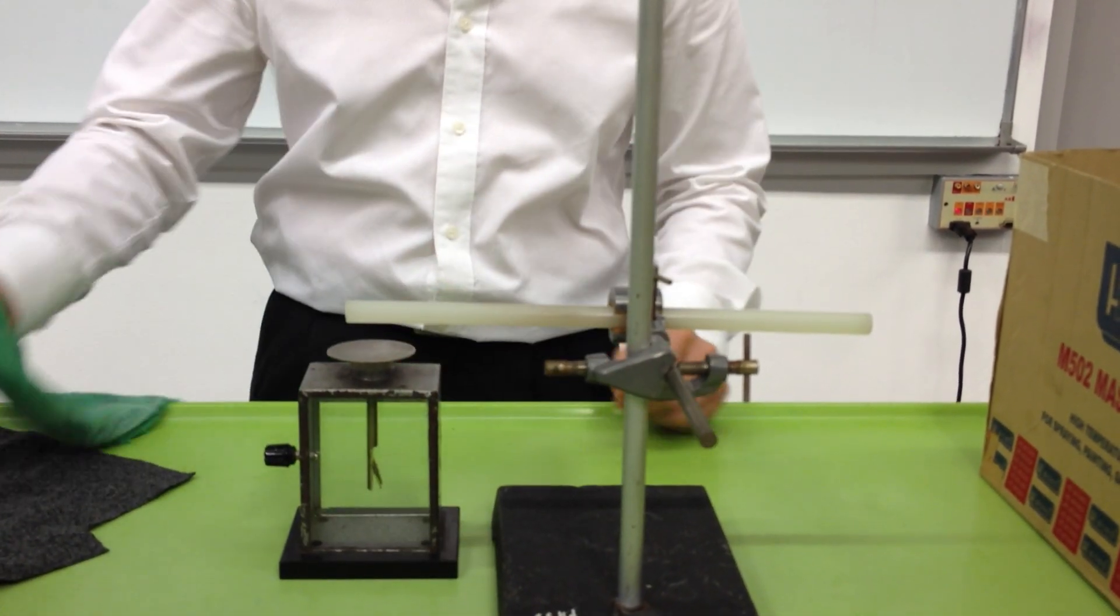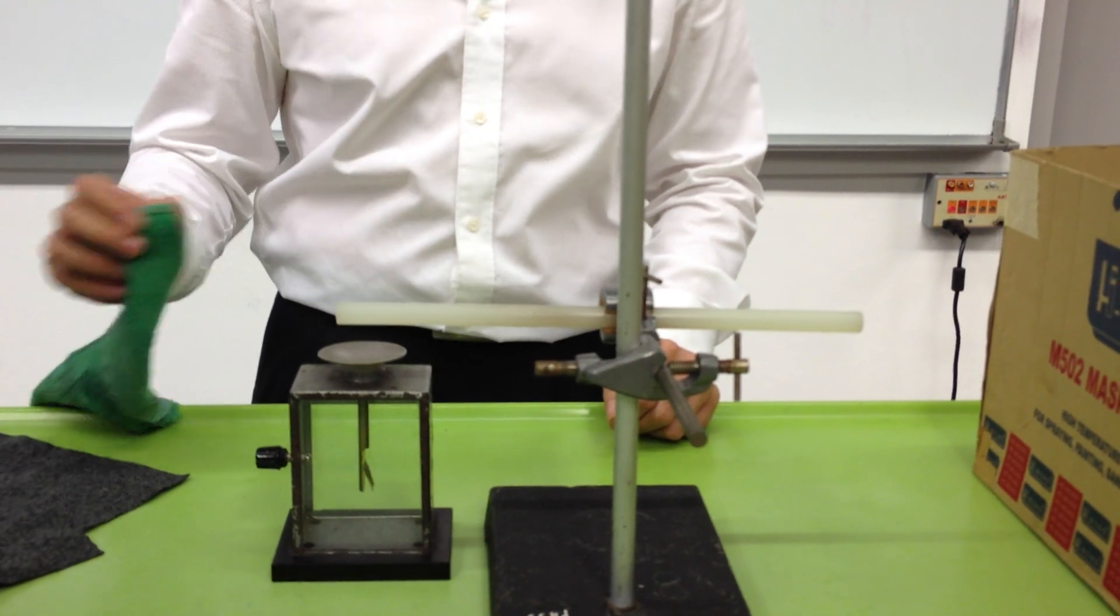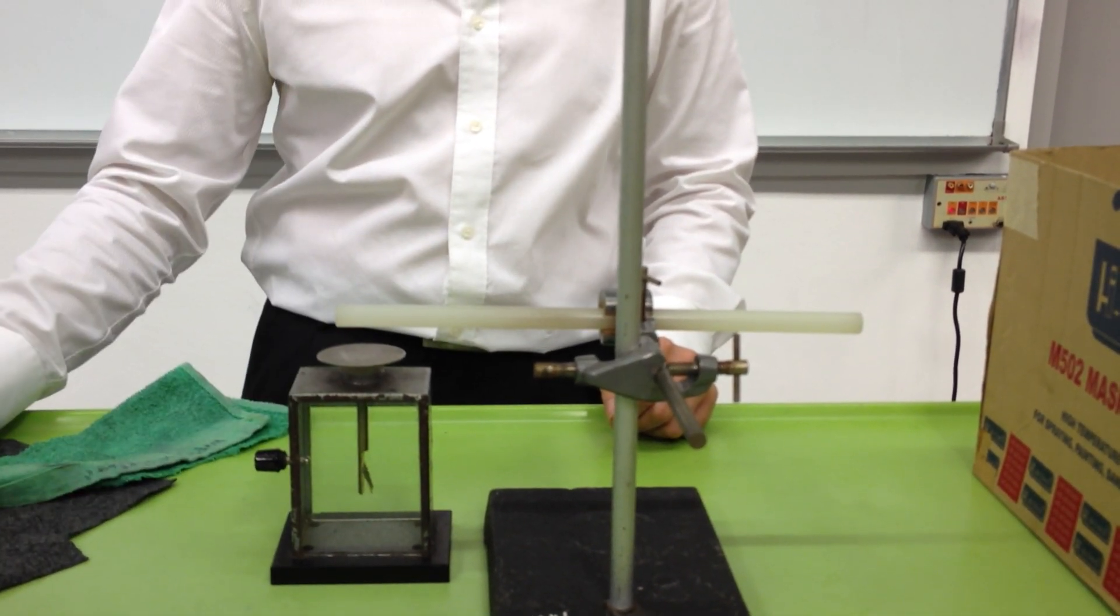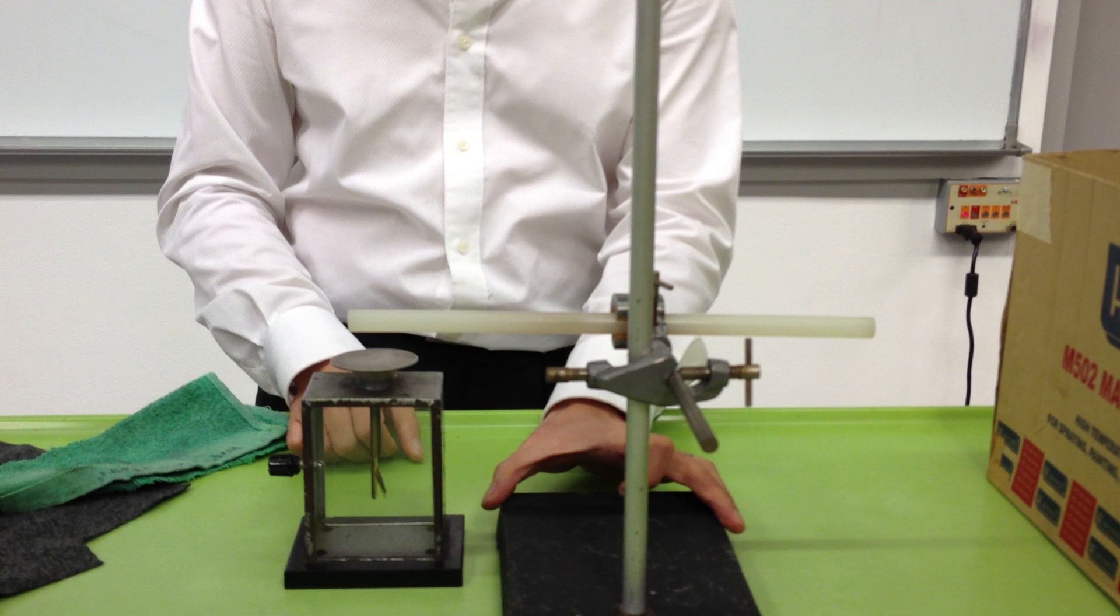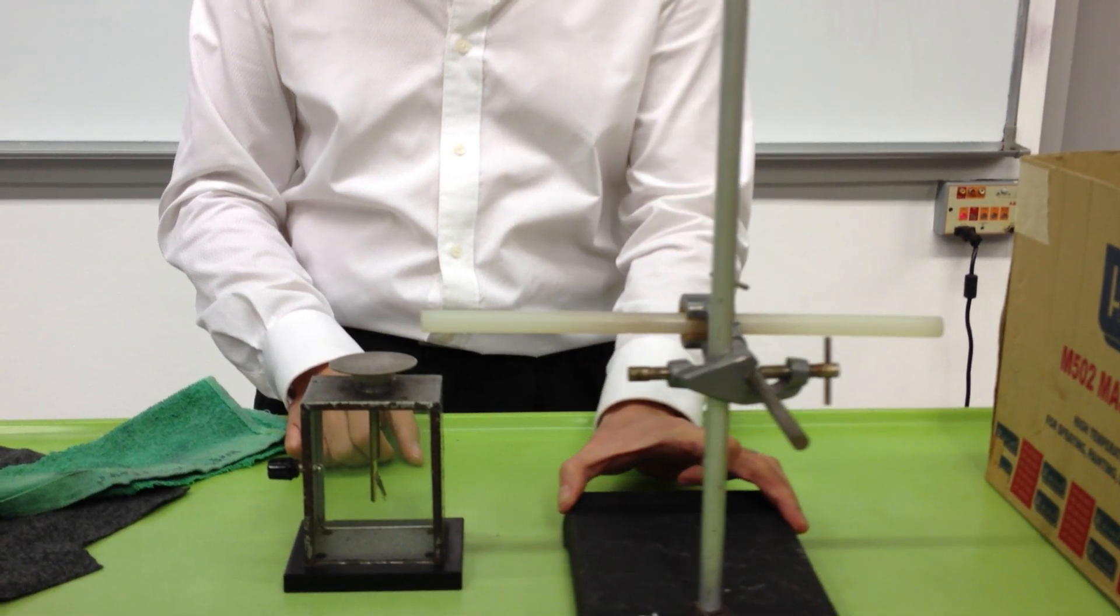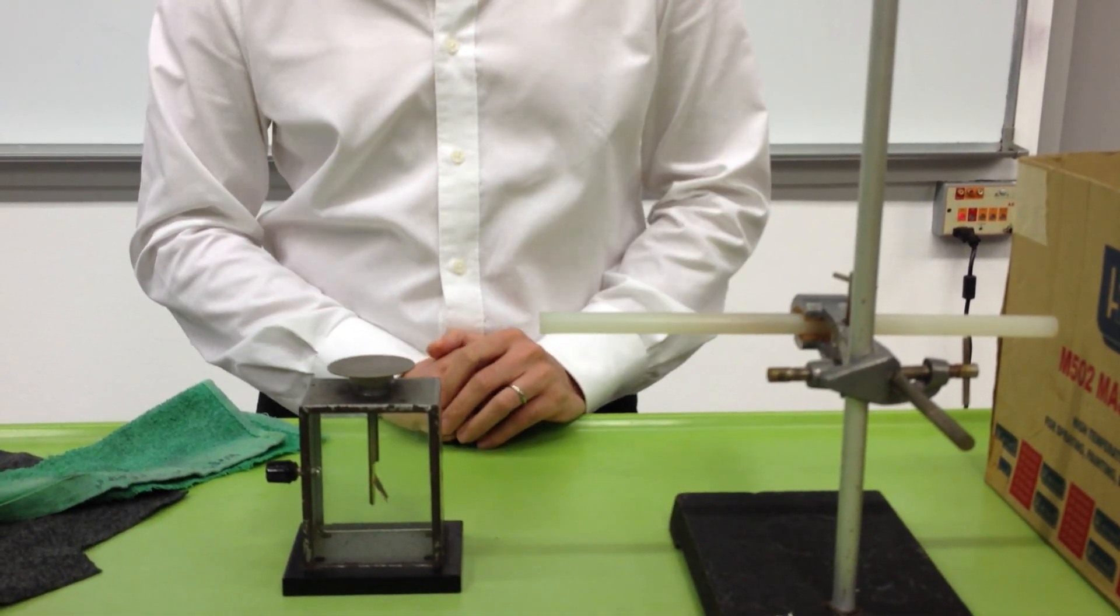This time, you can see there's no increased deflection when I remove the damp cloth. When I remove the rod, the deflection increases.